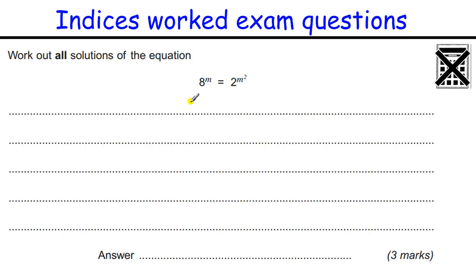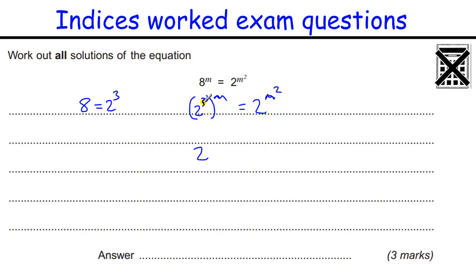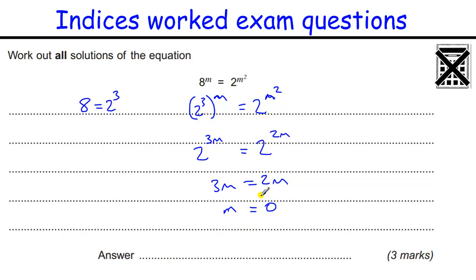Find all solutions to this equation. When you have 8 to the power of something equalling 2 to the power of something, write everything in terms of the smaller base. 8 is 2 cubed, so 2 cubed to the power of m equals 2 to the power of m squared. Powers of powers means we multiply: 2 to the 3m equals 2 to the 2m. So 3m equals 2m, and subtracting 2m gives m equals 0 — the only solution.